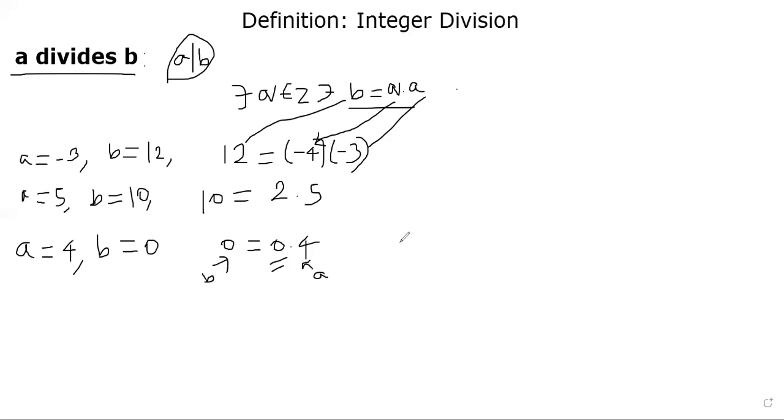On the other hand, just to be clear, 0 doesn't divide 4. If you put a equal to 0, b equal to 4, you can't write 4 equals 0 times something. That's not possible. 4 equals whatever q you put times 0 is going to be 0 all the time.